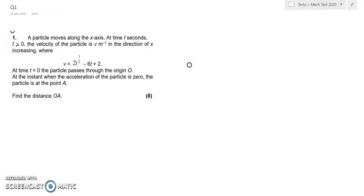This was the first question of the test. A particle moves along the x-axis. At time t seconds, t greater than or equal to 0, the velocity of the particle is v meters per second in the direction of x increasing, where v equals 2t to the power 3/2 minus 6t plus 2.